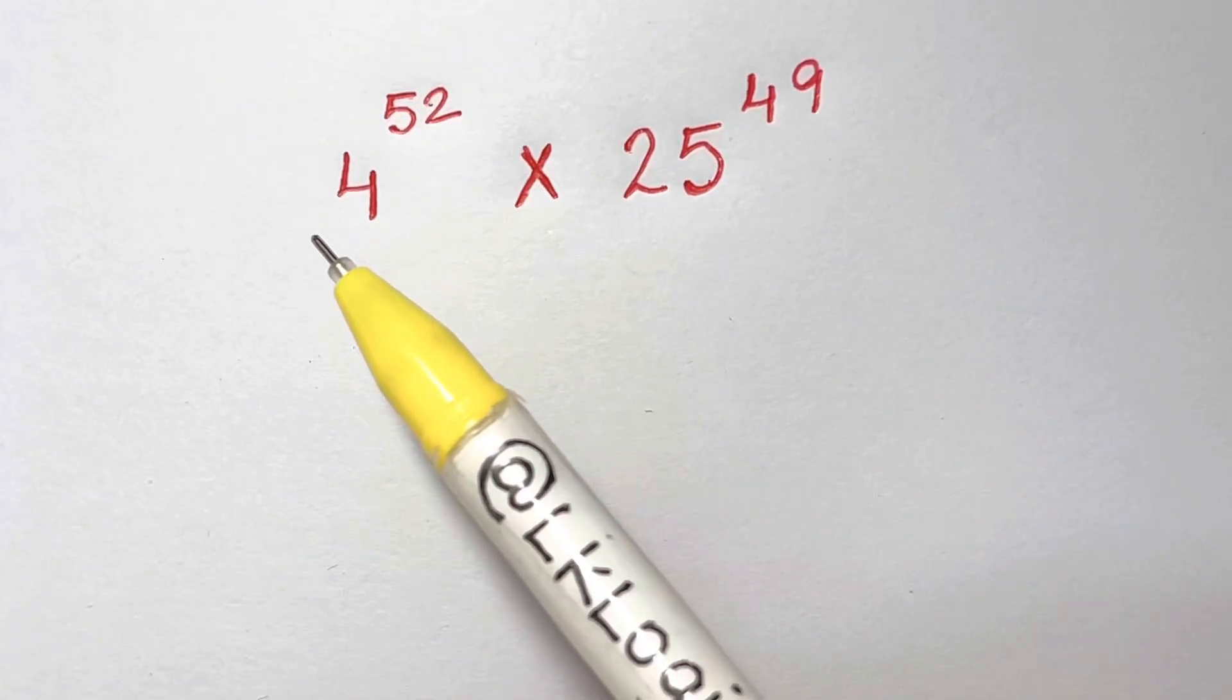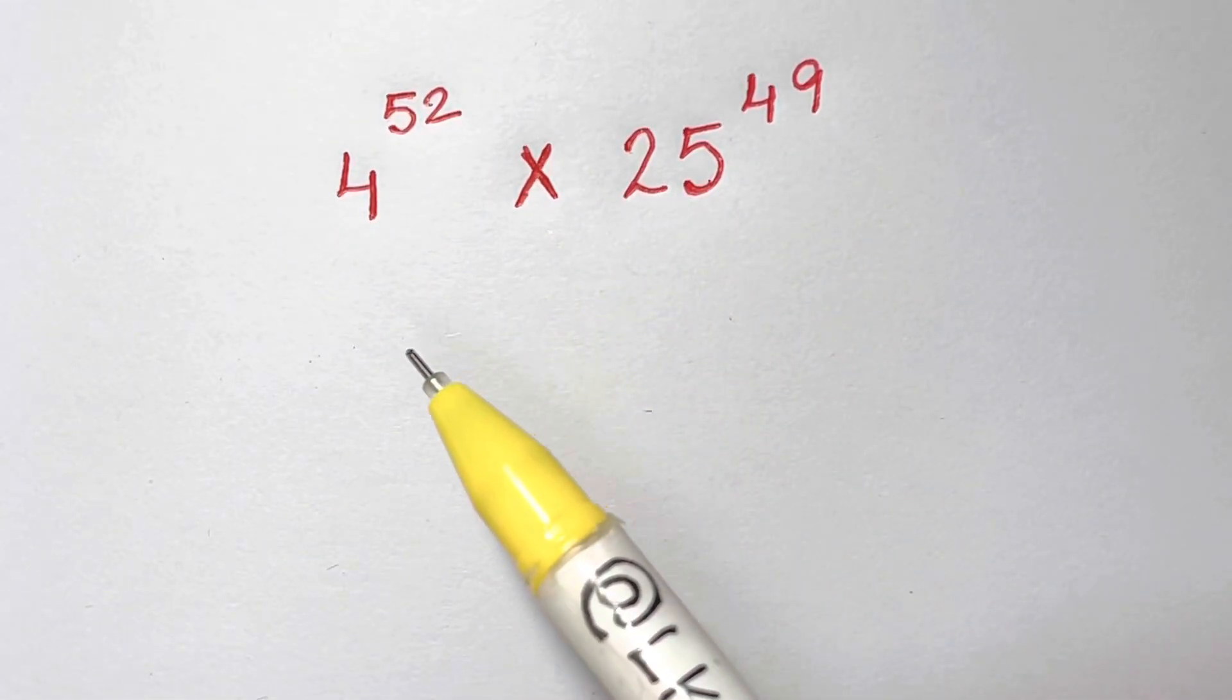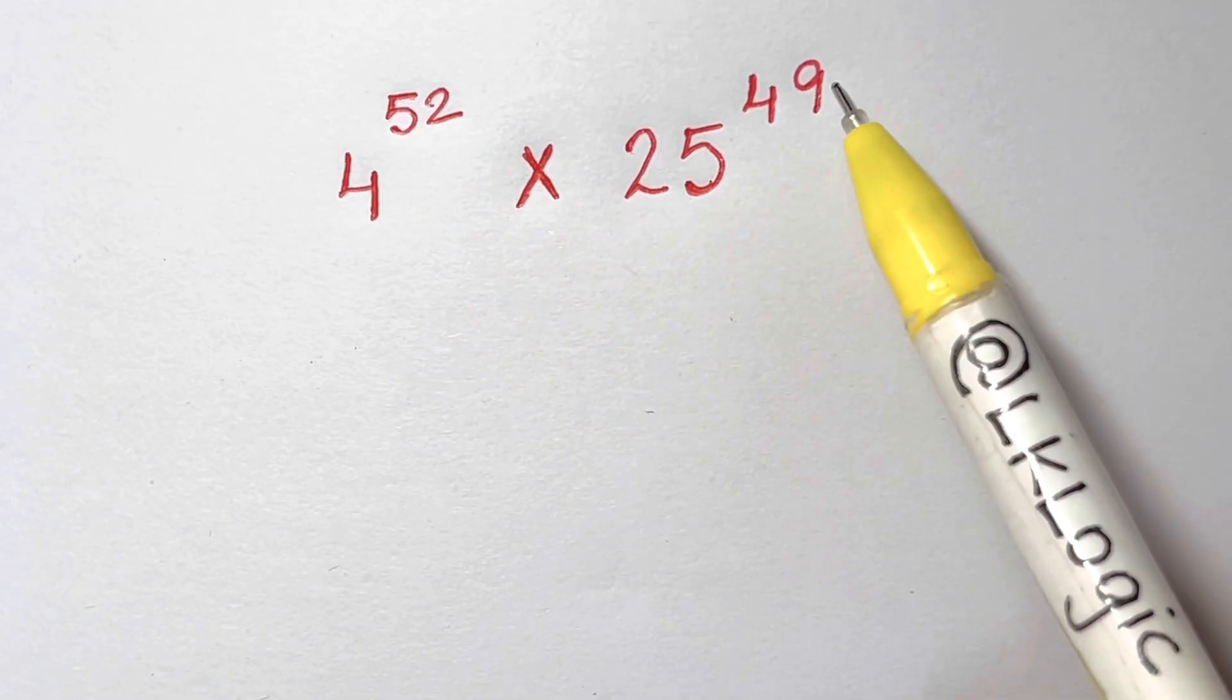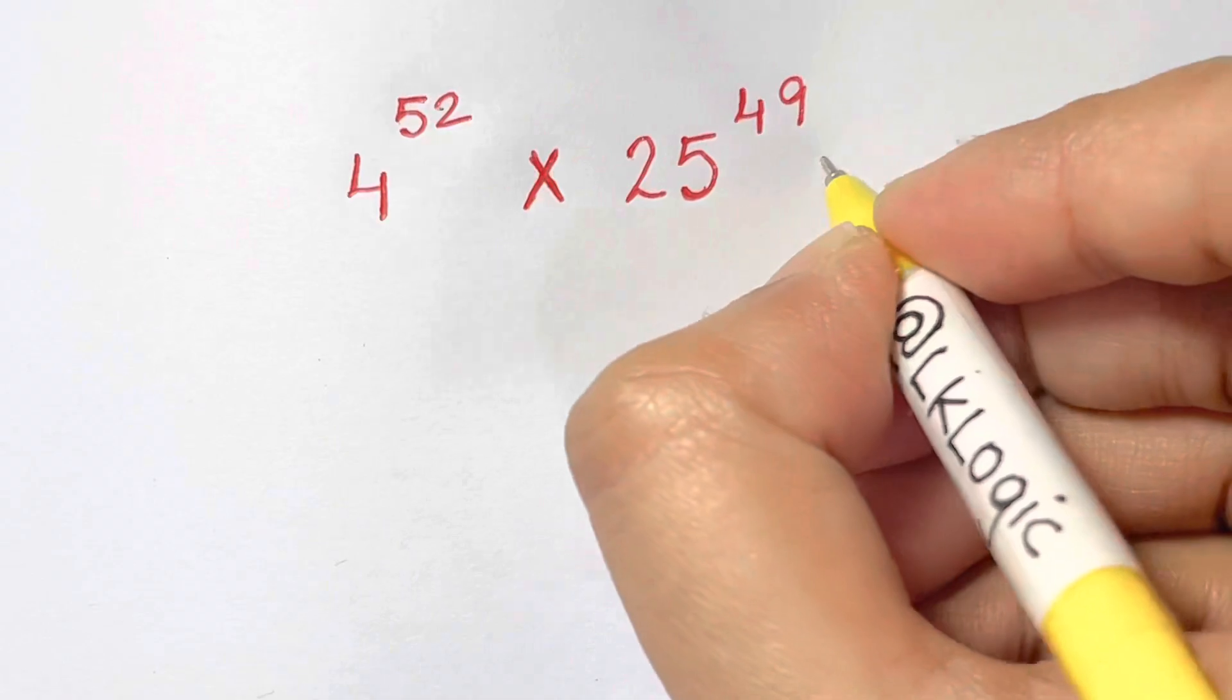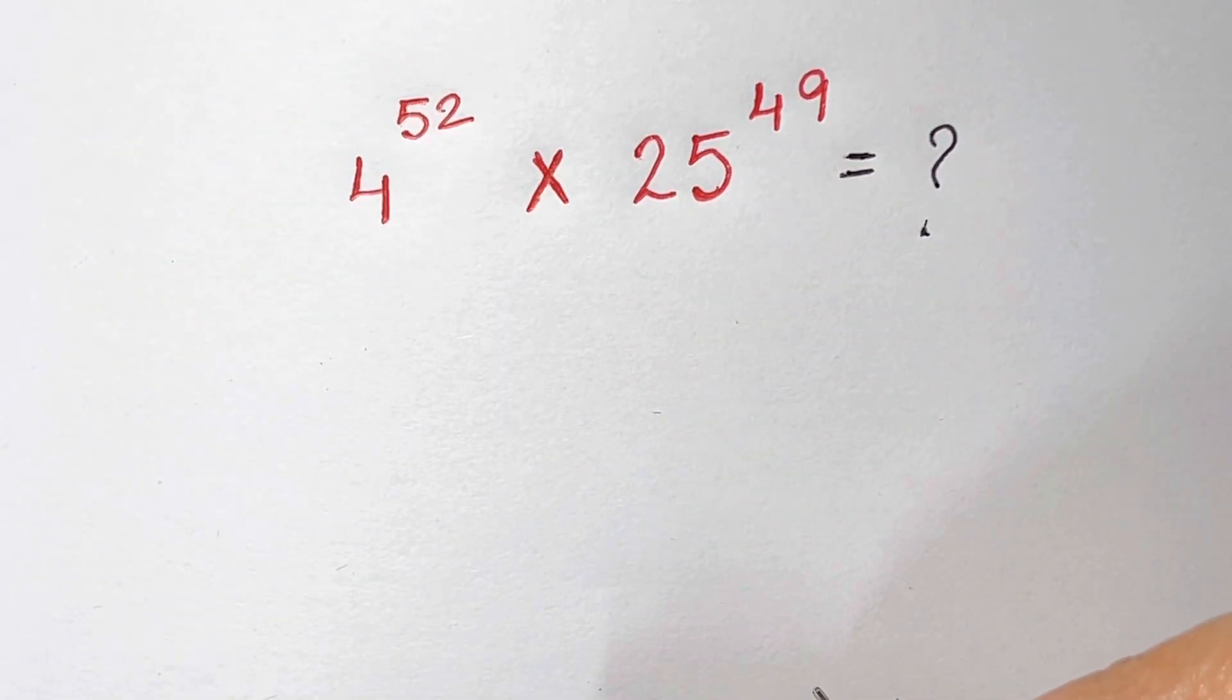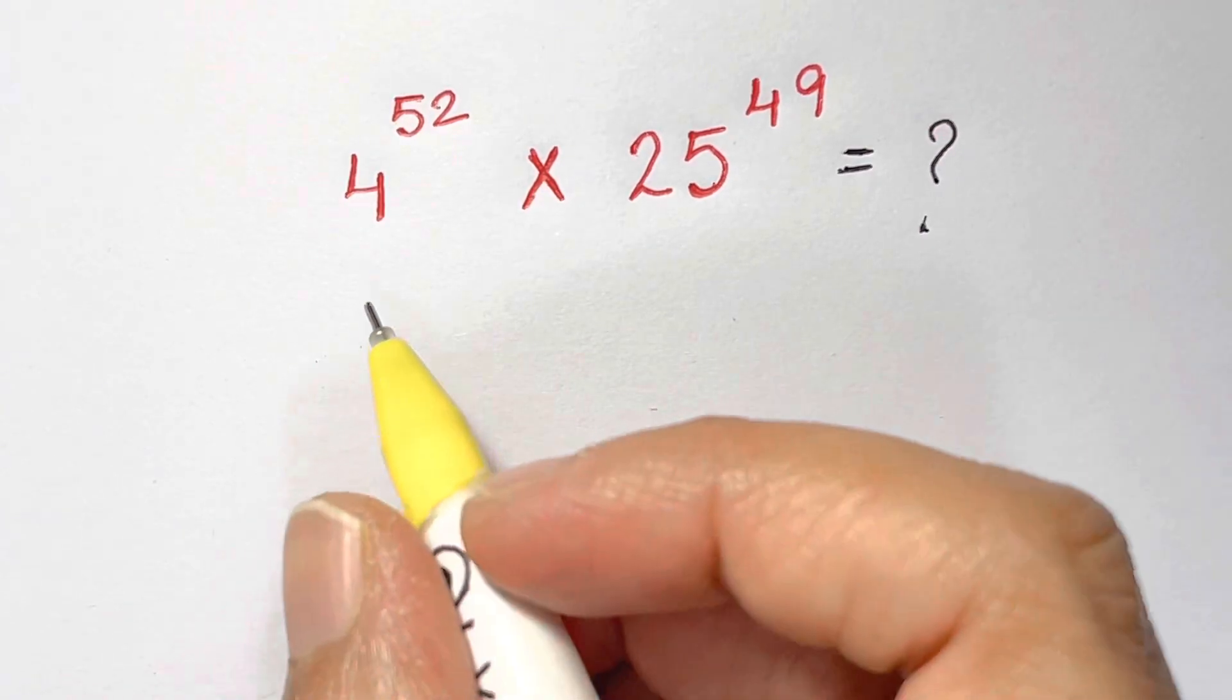Hi guys, we have a nice exponential question here which is 4 to the power of 52 times 25 to the power of 49 equals what. So let's solve for that. Now here as you can see we have 4 to the power of 52 and 49.